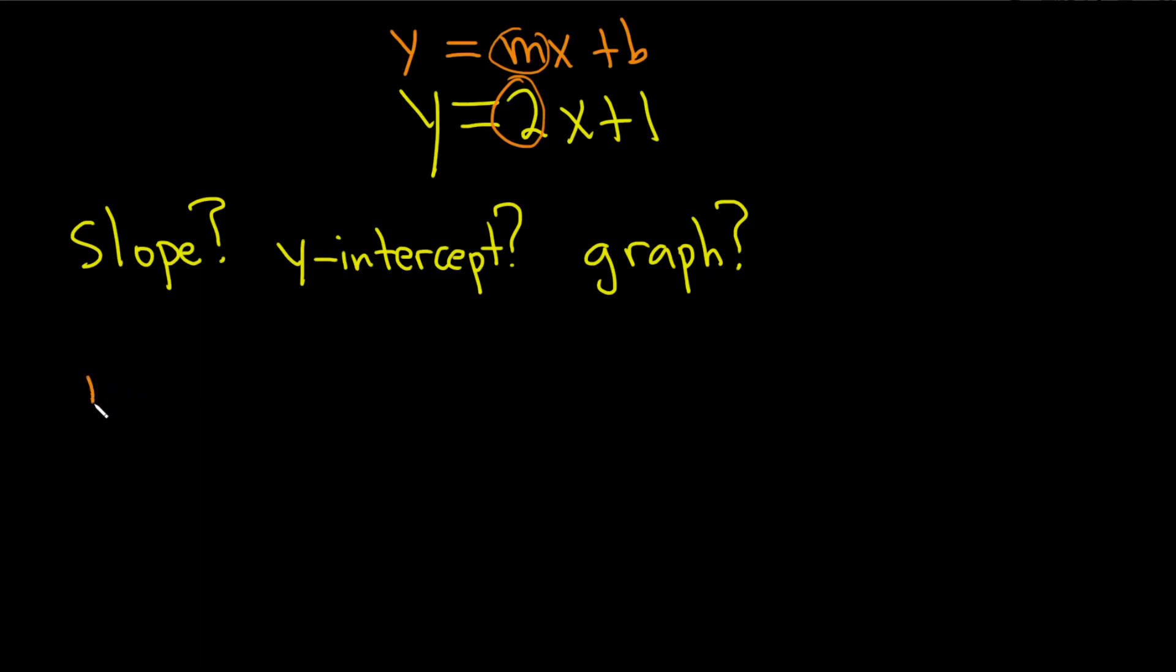That's our slope. So our slope is m equals 2. This is the slope. The y-intercept is b, so that's 1. So the y-intercept is equal to 1.